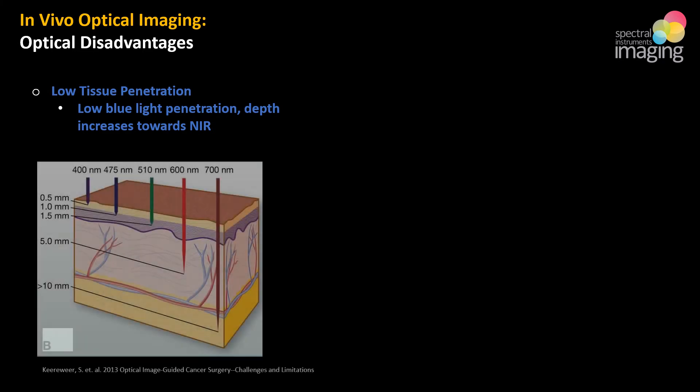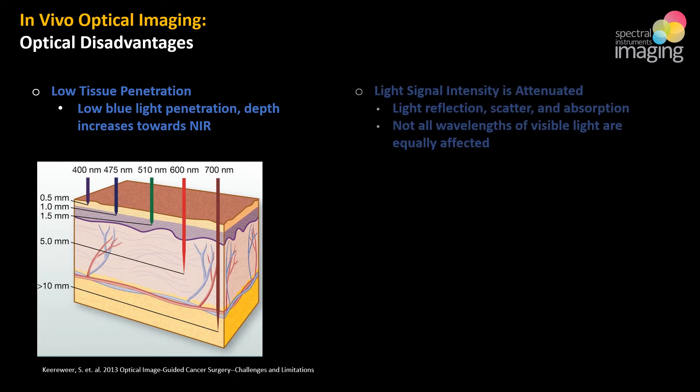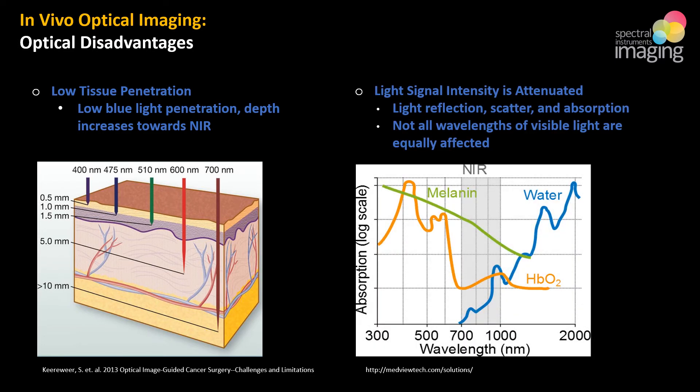Now a couple of disadvantages. Photons of light are scattered, absorbed, and reflected by living tissue. Consequently, the range of penetration for the visible spectrum through living tissue runs only as deep as about a centimeter. That range increases from the blue-green range of GFP at 500 nanometers to the near-infrared of ICG up around 800 nanometers. This lack of depth is due to factors such as scattering and absorption from different levels of melanin and absorption of blue light by oxygenated hemoglobin in the blood.